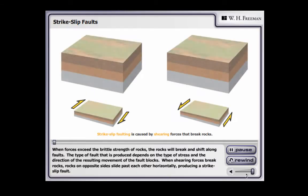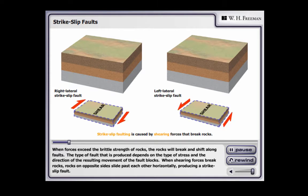When forces exceed the brittle strength of rocks, the rocks will break and shift along faults. The type of fault that is produced depends on the type of stress and the direction of the resulting movement of the fault blocks.